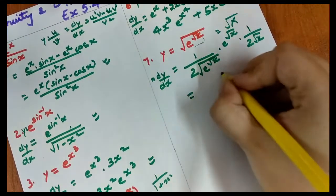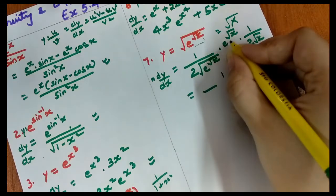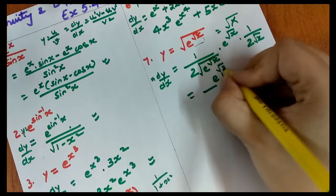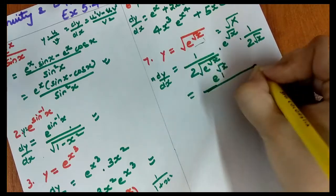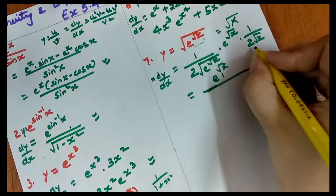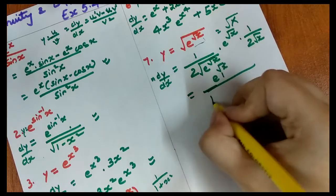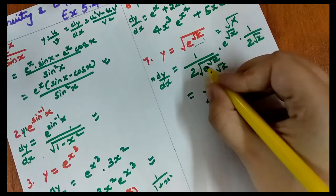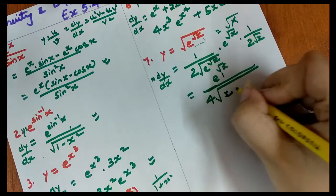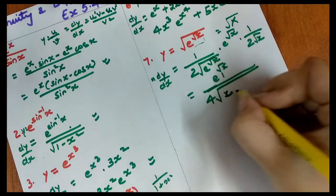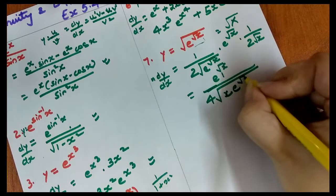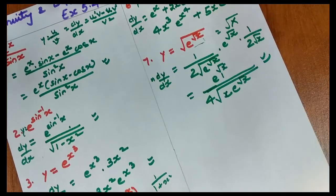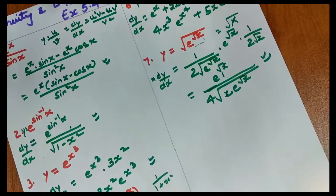Writing it out: 1 is in the numerator, e^(√x) comes on top, and in the denominator we have 2 multiplied by √x times √x — which is 2 multiplied by √x. So our final answer is e^(√x) / (2√x).